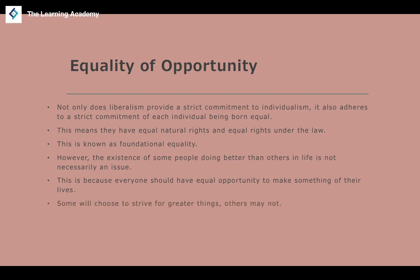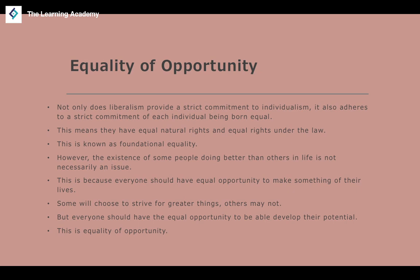Everyone should have the equal opportunity to develop their own potential, but not everybody will reach the top. This contrasts with equality of outcome, which states that at the end of a given period everybody must be equal no matter what. Most people agree individuals should have the opportunity to pursue what they want, but the state shouldn't enforce equal outcomes regardless of what happens. Equality of opportunity is a far less controversial idea.